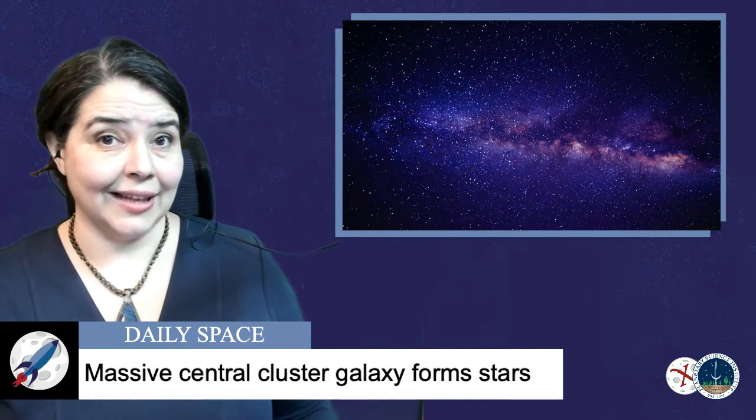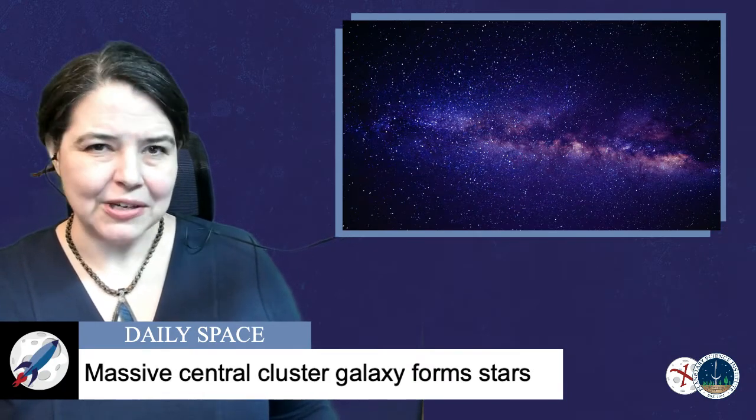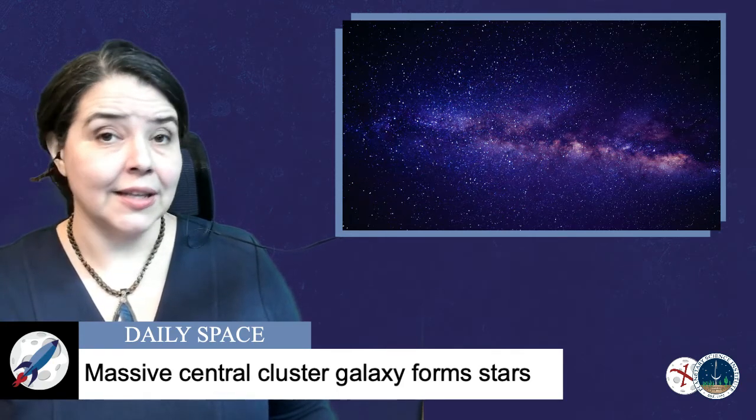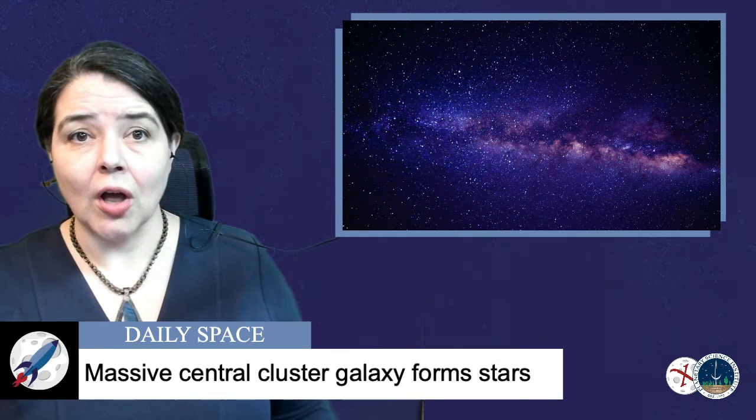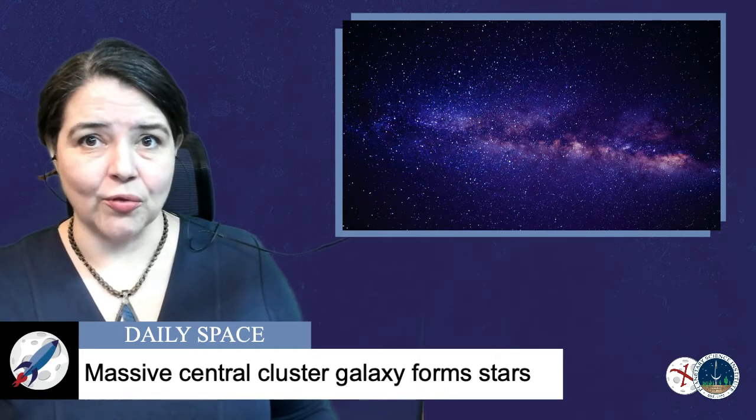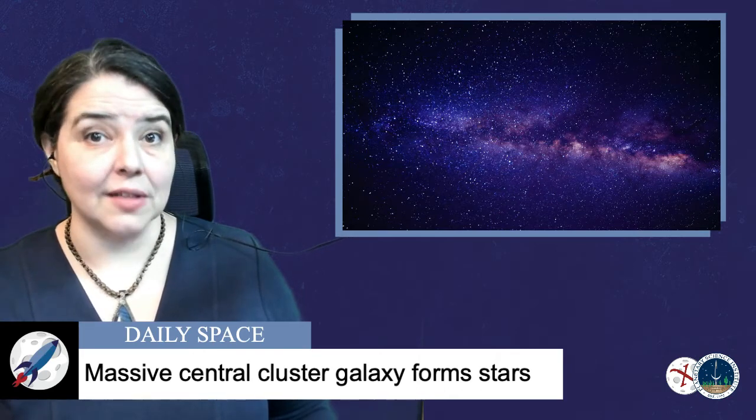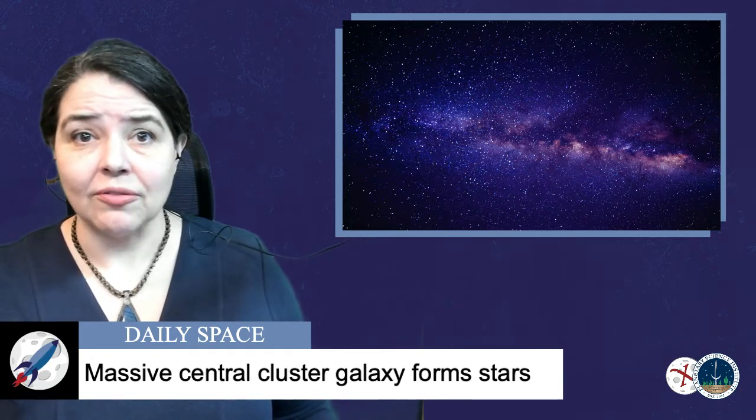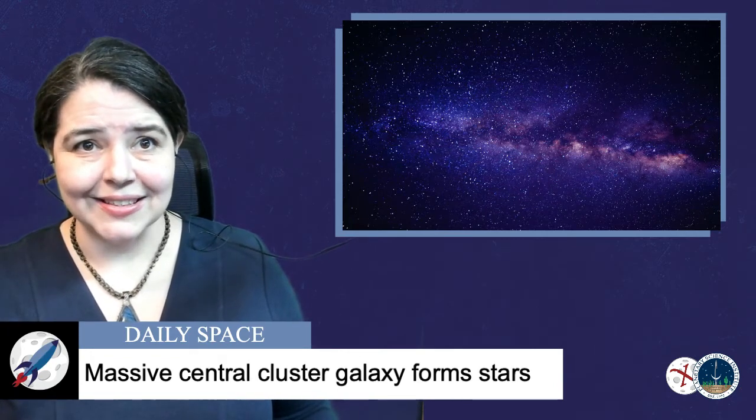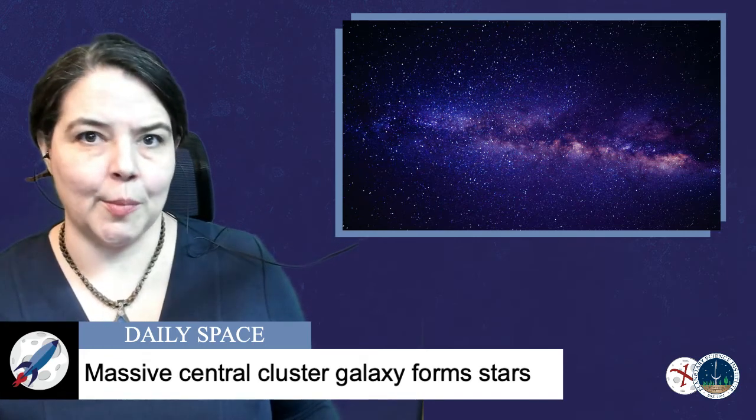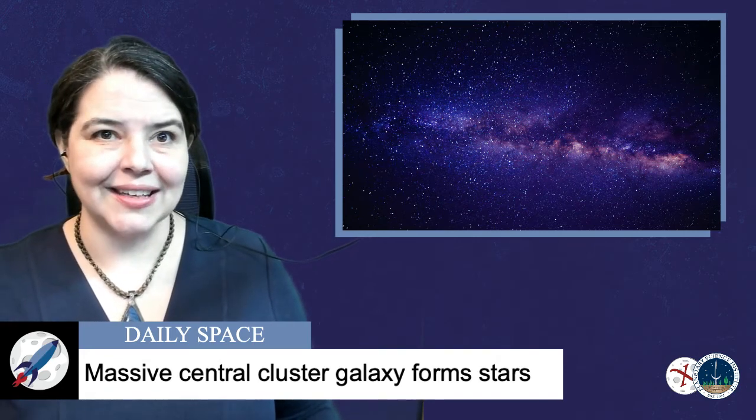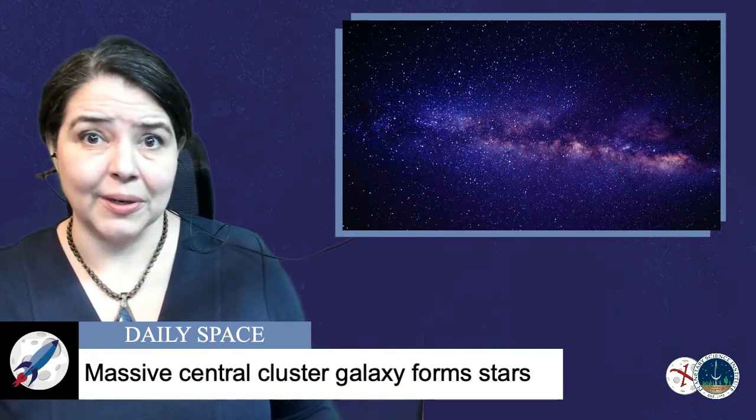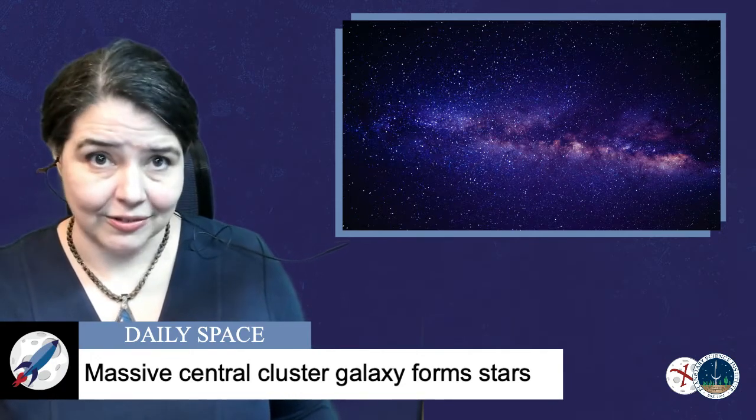For galaxies, location matters most for the special galaxies at the hearts of galaxy clusters. These giant elliptical galaxies have gone by many names over the years, from CD galaxies to brightest cluster galaxies. And no matter what you call them, these systems do not behave like other elliptical galaxies. For instance, in Astronomy 101, students are taught that elliptical galaxies are filled with old red stars and are considered dead because they are no longer forming stars.